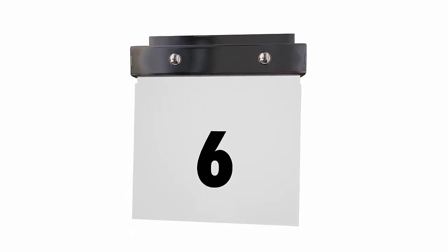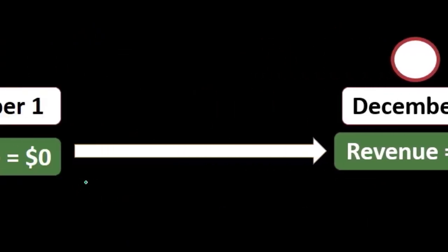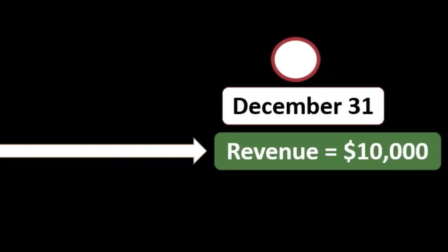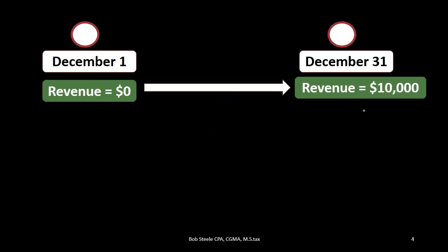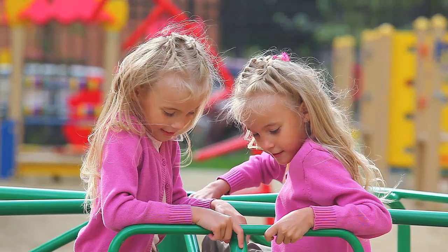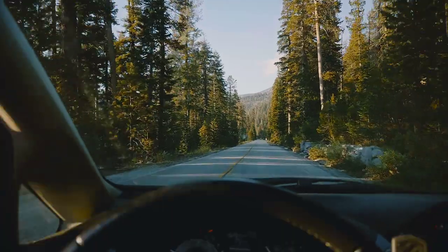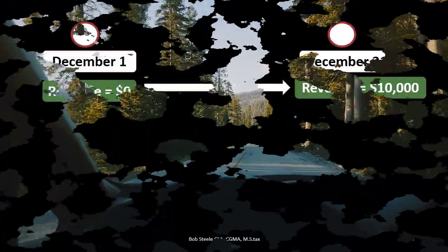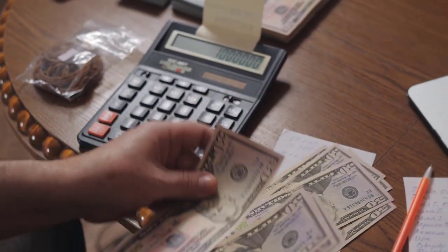For example, the date we will be looking at is December 1st through December 31st. That means if we have revenue of $10,000, we're talking about revenue that started at zero and was counted upwards during December, ending at $10,000 — similar to driving a car and counting miles driven in a day, starting at zero and increasing to some total. We need a beginning point and an ending point for that measurement to make sense.